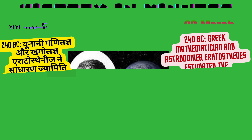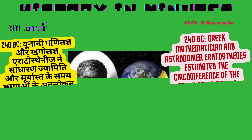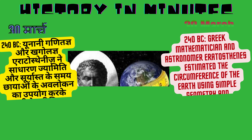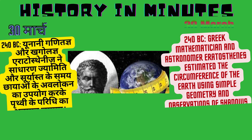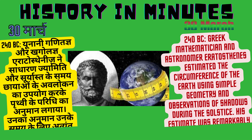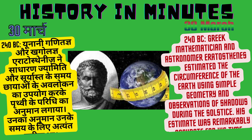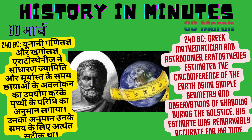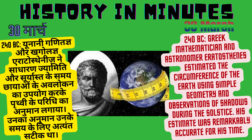240 BC: Greek mathematician and astronomer Eratosthenes estimated the circumference of the Earth using simple geometry and observations of shadows during the solstice. His estimate was remarkably accurate for his time. (Hindi: Yunani Ganitagya aur Khagolagya Eratosthenes ne Sarla Jamiti aur Suriyasthike Samayachayao ke avlokan ka upyog karke Prithvi ke Paridhi ka anumaan lagaya. Unka anumaan unke samay ke liye atyant satiq tha.)